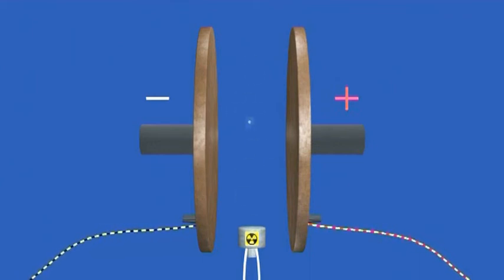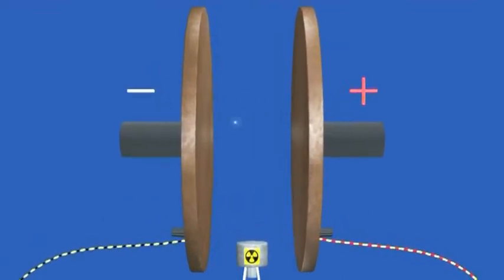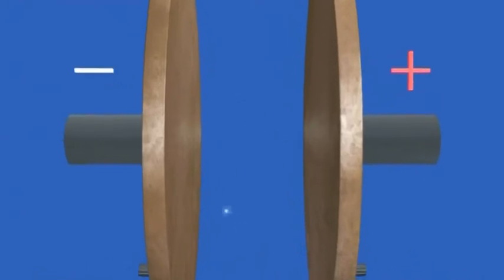I've got my radioactive source at the bottom, allowing the ionizing radiation to come between the plates. Each of those sparkles is representing an air particle which is being ionized.